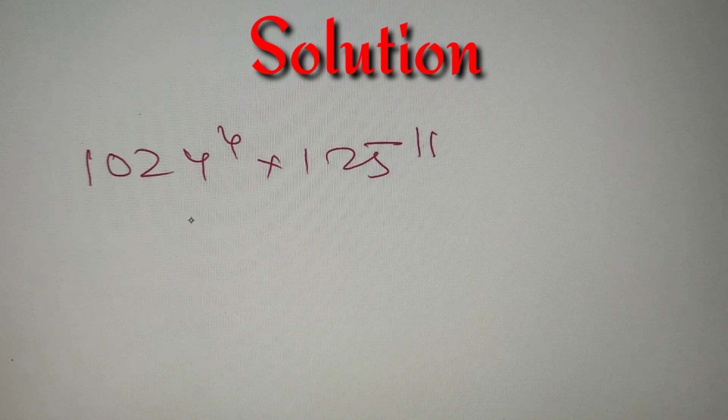I hope that you've tried the question and you have got the solution. If you didn't, then let's check the solution. So according to the given question, we are provided with the number 1024 raised power 4 into 125 raised power 11. Now we have to find the number of digits in this number.